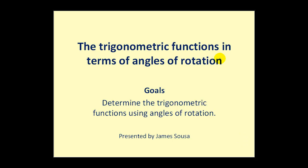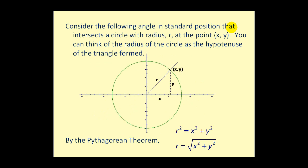Welcome to a video on the trigonometric functions in terms of the angles of rotation. If we consider an angle theta in standard position that intersects a circle with radius r at the point (x, y), you can think of the radius as the hypotenuse of the triangle formed by dropping a perpendicular to the x-axis. Because of the Pythagorean theorem, r squared equals x squared plus y squared, so r equals the principal square root of x squared plus y squared.